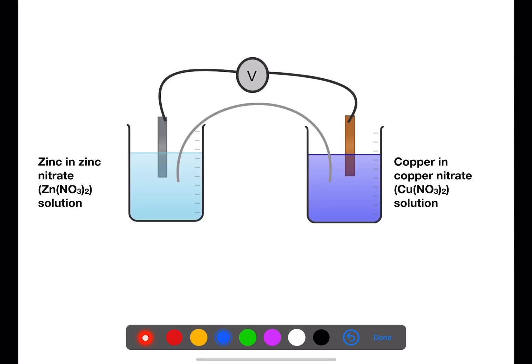We can also set up electrochemical cells using two beakers. In this case we take an electrode and put it in an electrolyte solution of its own ions. Here we have zinc within zinc nitrate solution and copper within copper nitrate solution. To complete the circuit we need something called an ion bridge. An ion bridge is usually a piece of paper which has been soaked in a salt solution and allows ions to flow between the two beakers. We always have ions flowing in the ion bridge and electrons flowing in the wires.